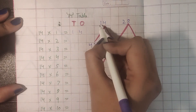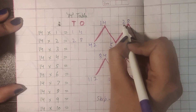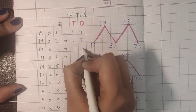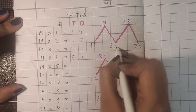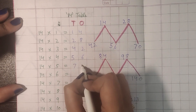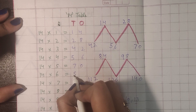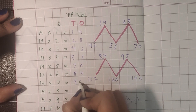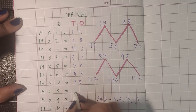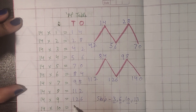Let's verify: 14 times 1 is 14, 14 times 2 is 28, 14 times 3 is 42, 14 times 4 is 56, 14 times 5 is 70, 14 times 6 is 84, 14 times 7 is 98, 14 times 8 is 112, 14 times 9 is 126, and 14 times 10 is 140.